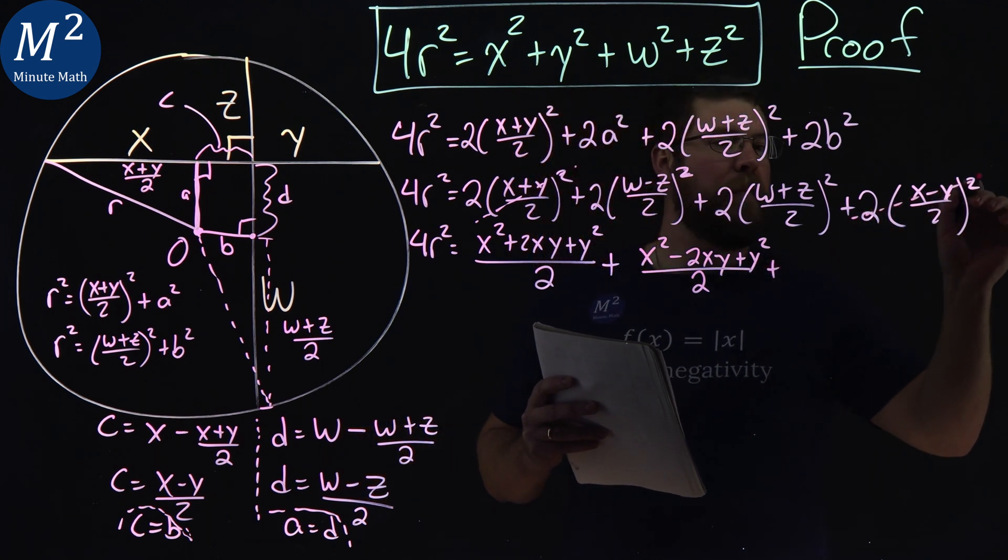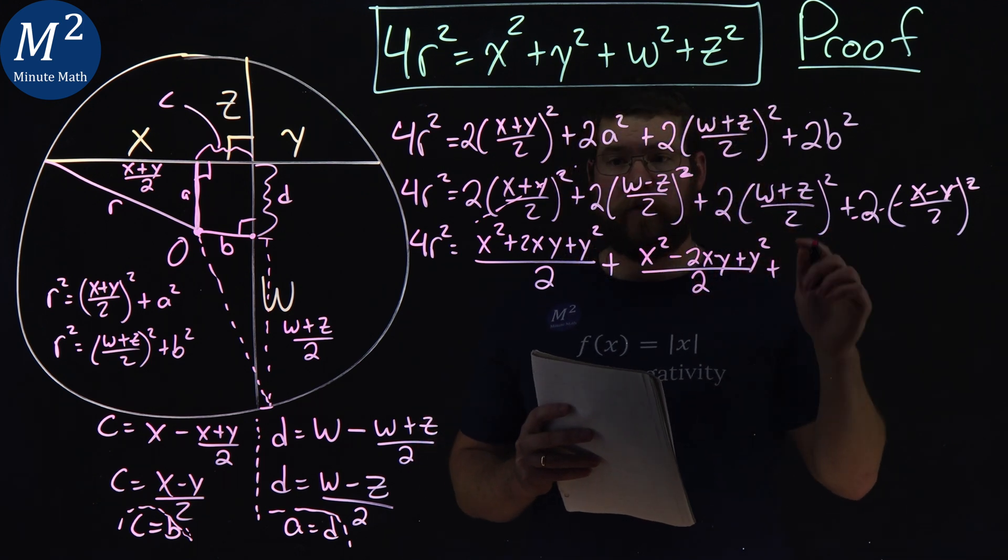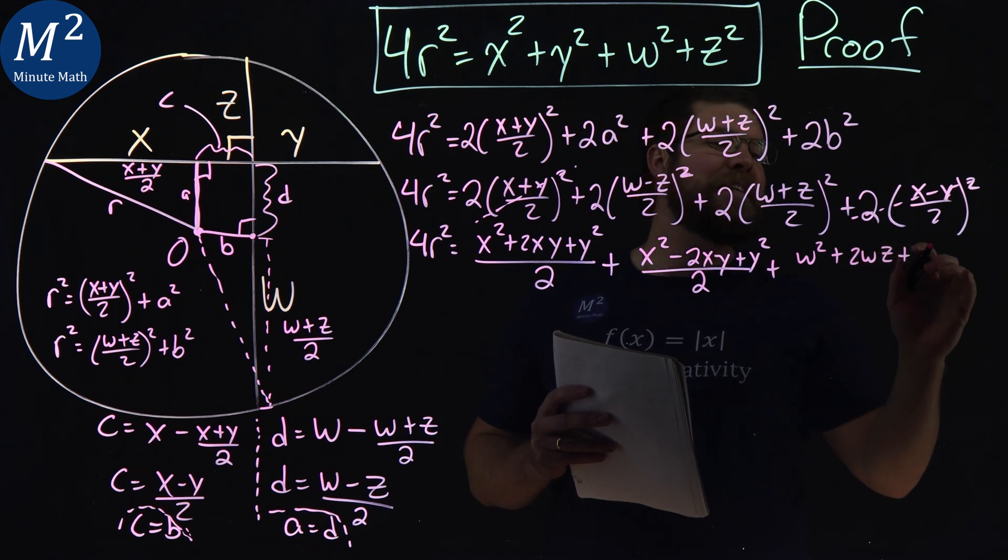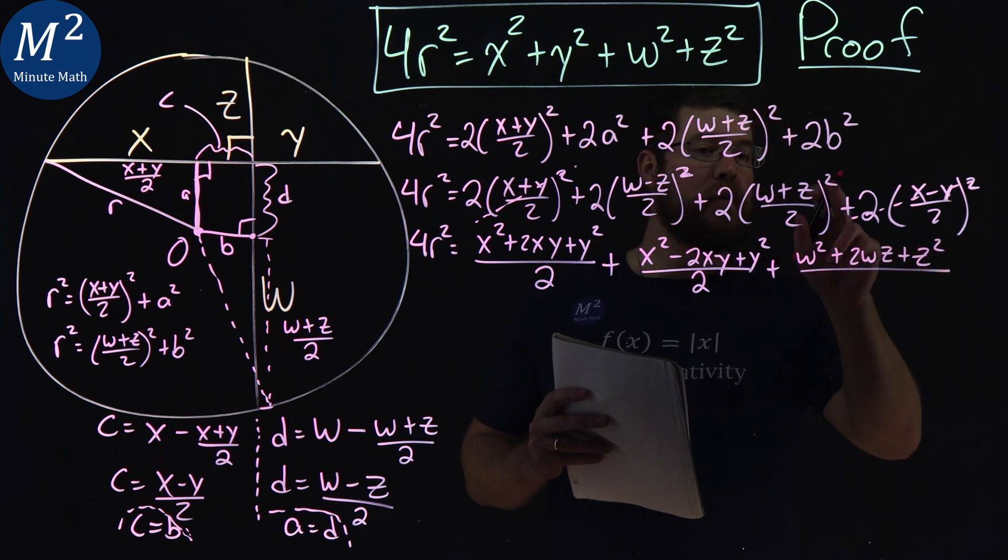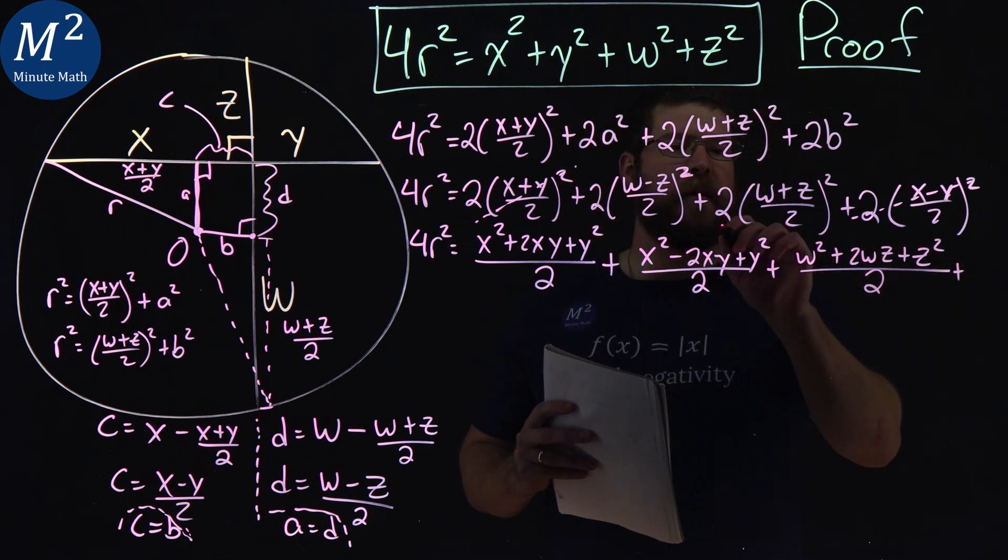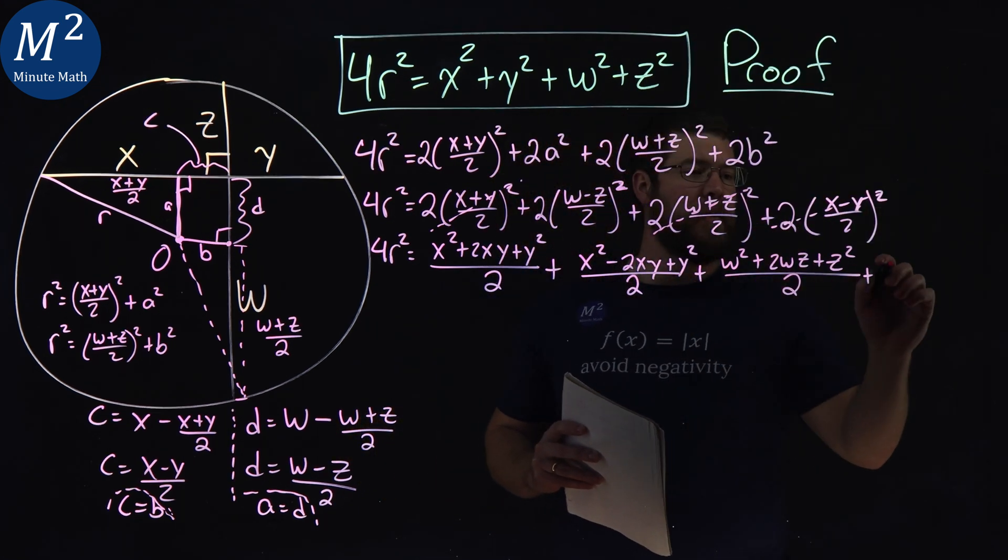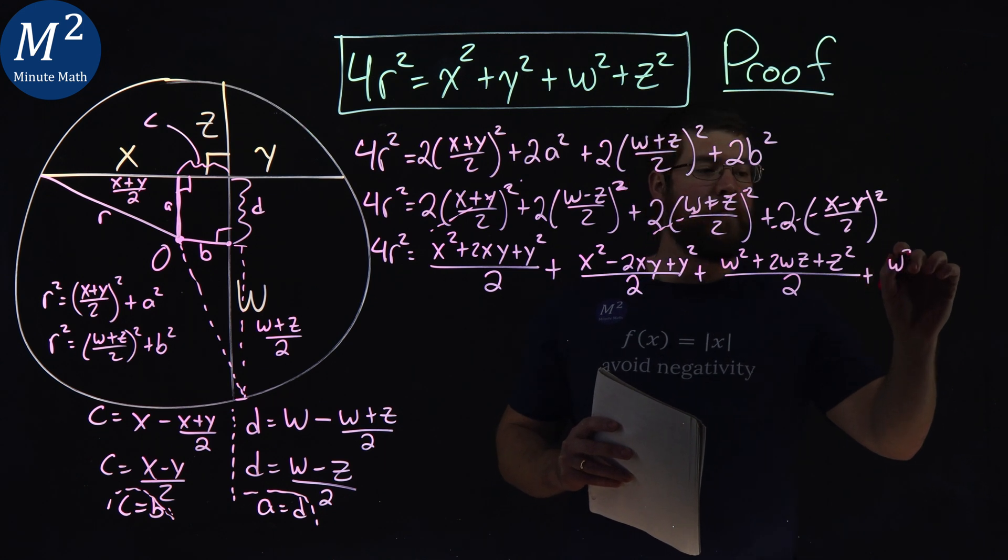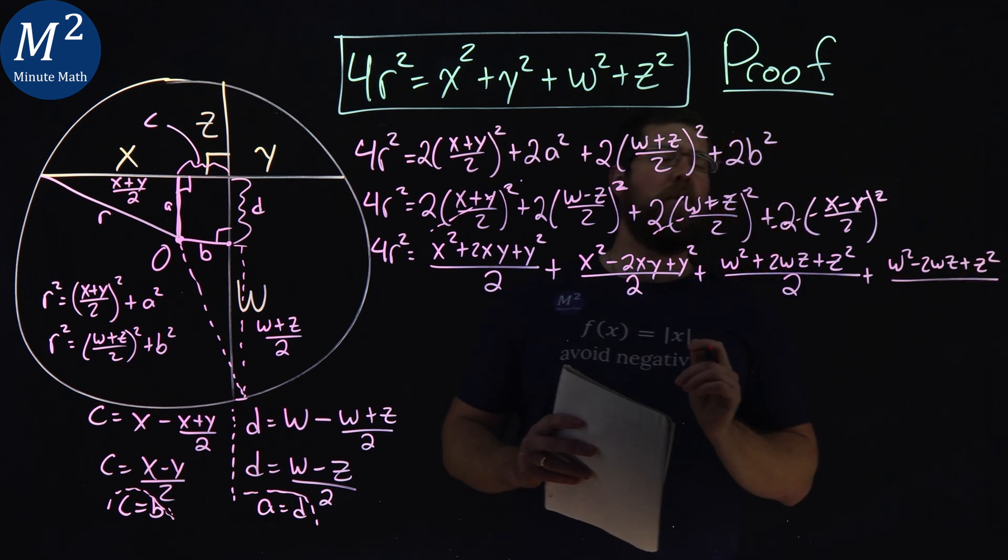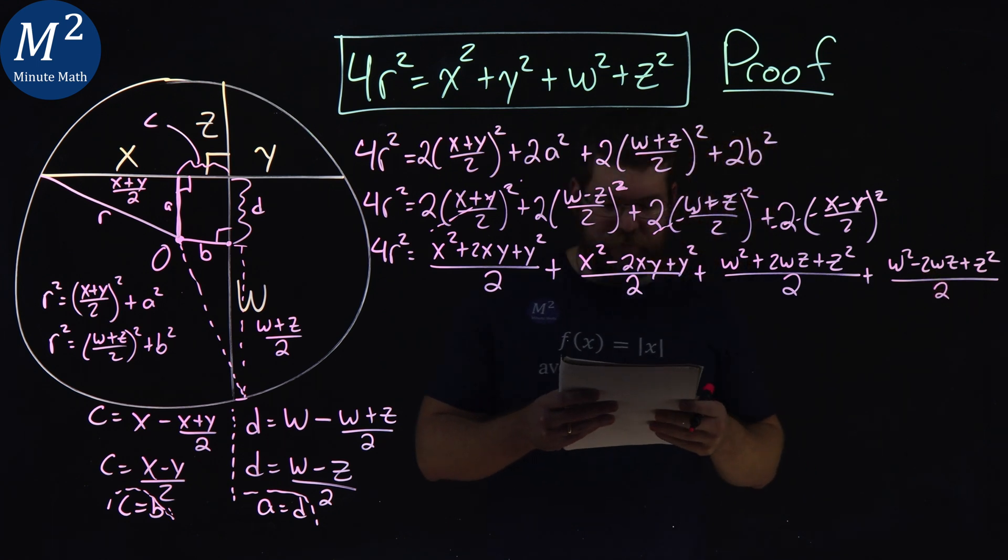Next one to keep in uniform form, (w + z)² is (w² + 2wz + z²). All over, 2 squared is 4, cancels out with this 2, and 2 in the denominator. The last one: (w - z)² is (w² - 2wz + z²)/2.